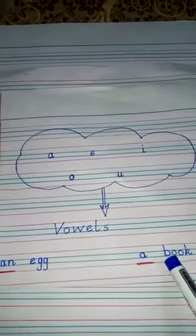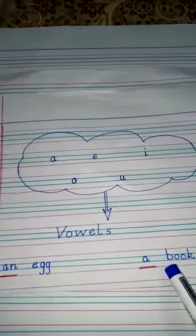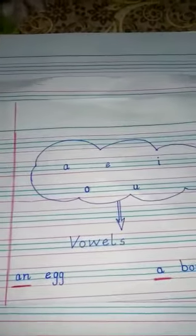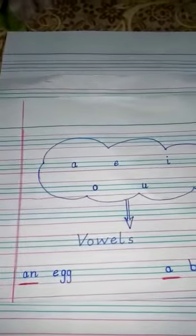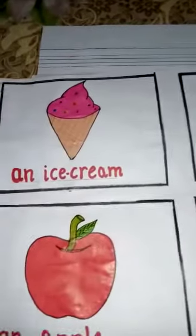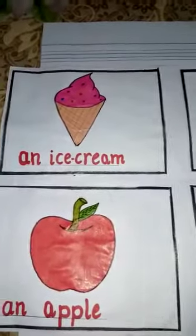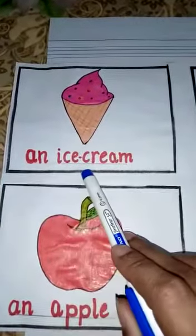Let's see some examples. You can see an ice cream, an apple, an umbrella, an orange.